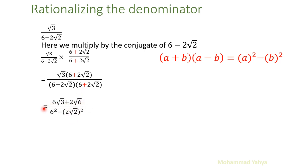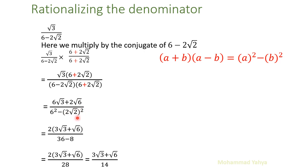In the denominator, since it is always in the form (a + b)(a − b) when we multiply by the conjugate, it becomes a² − b²: the first number squared minus the second number squared. Applying the power of 2 to both 2 and radical 2 eliminates the radical, and here is our final answer. Note that 36 − 8 = 28, and we take 2 as a common factor.